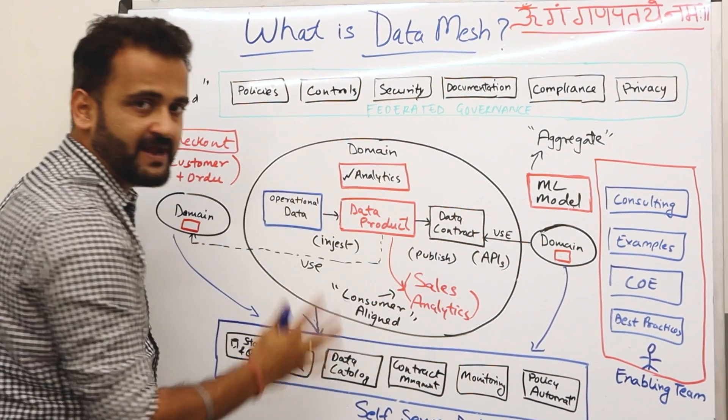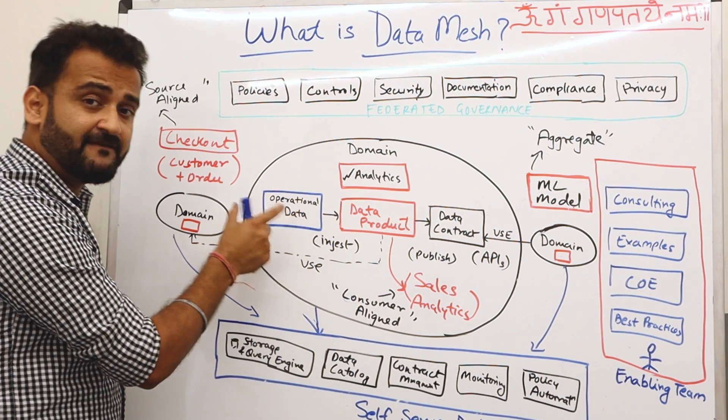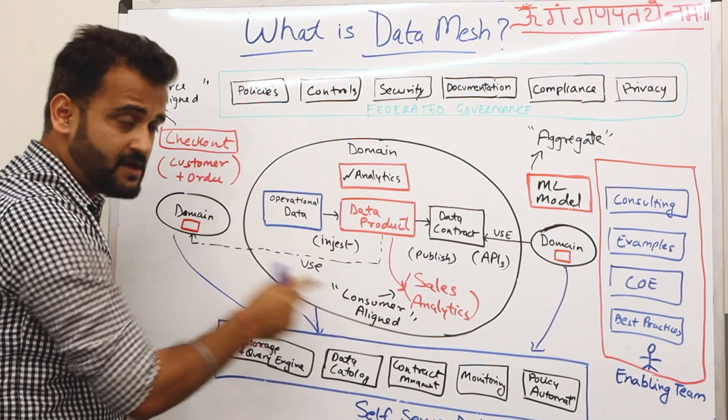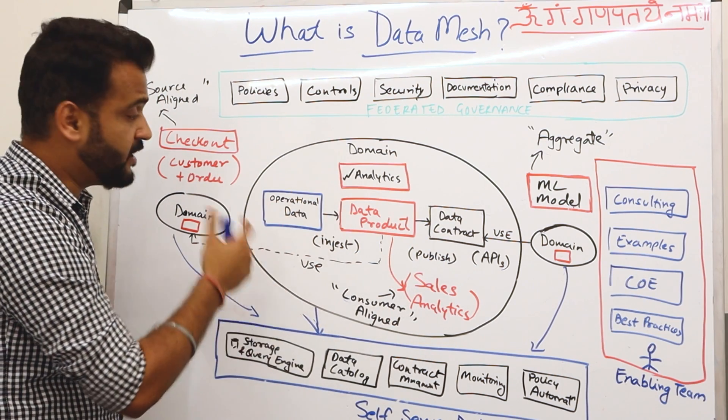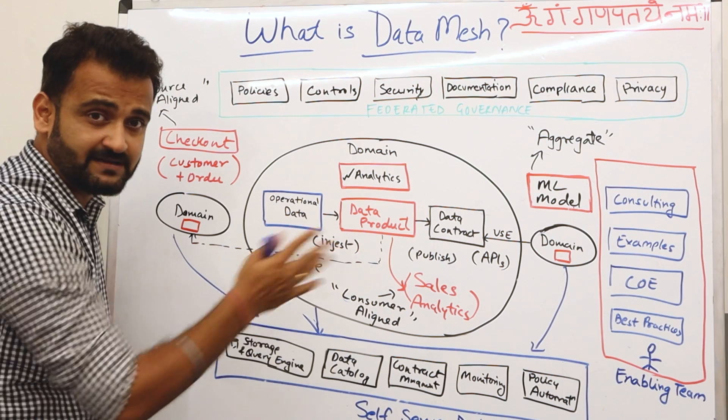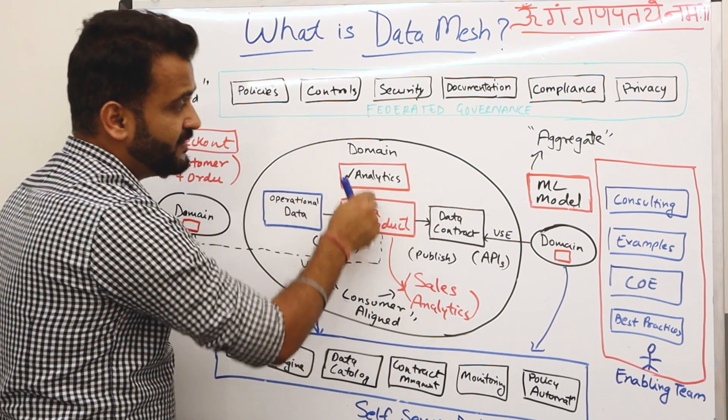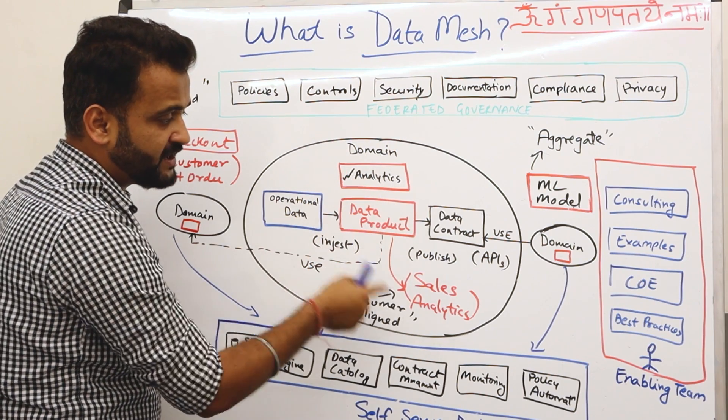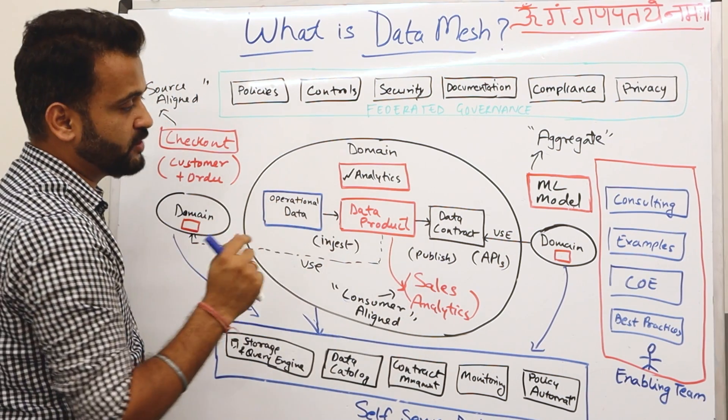So basically starting with the domain, this is your core domain, and this domain will have a centralized data product. It will have its own set of operational data originating from the source. For example, if it is a sales domain, it will have data coming from your sales application from where the orders are being booked. And then you will have analytics which can be used by the business.